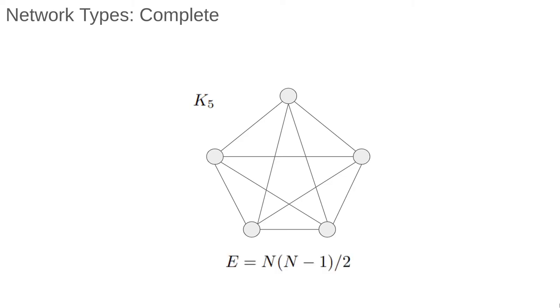The most common property of a complete graph that you'll need is that the number of edges is n times n minus 1 divided by 2. Hopefully this is intuitive, as this formula has come up a number of times in different guises. For each of the n nodes, they must connect to the n minus 1 other nodes, giving n times n minus 1 edges, and we divide by 2 to avoid double counting.